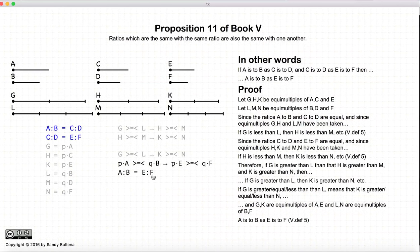So a to b is equal to e to f, and thus we have shown that ratios are transitive. In other words, a to b is equal to c to d, c to d is equal to e to f, it implies that a to b is equal to e to f.